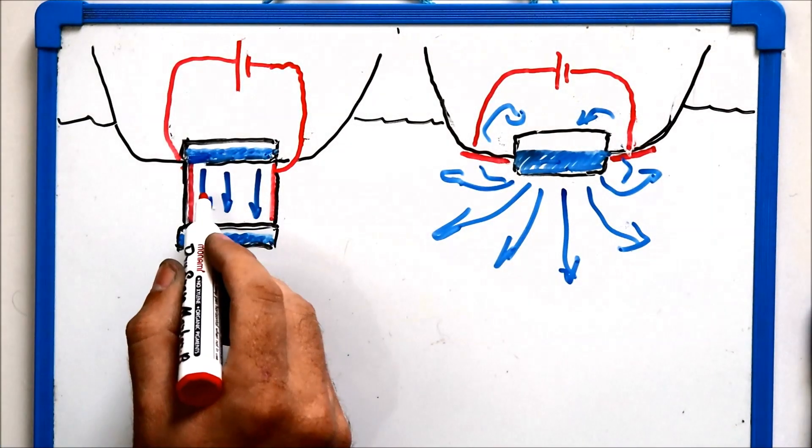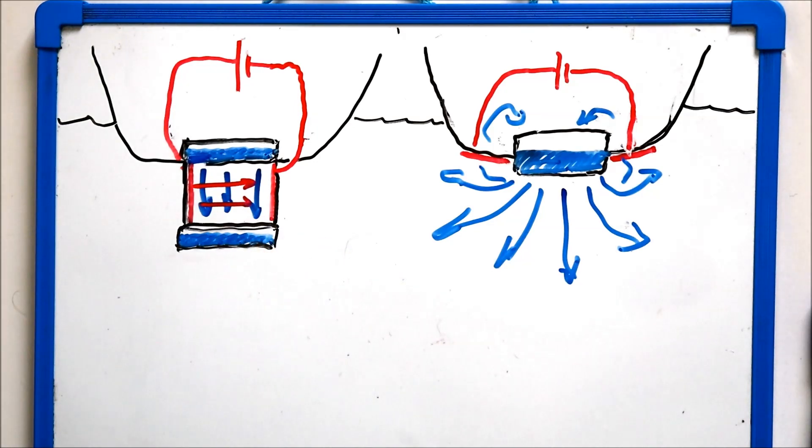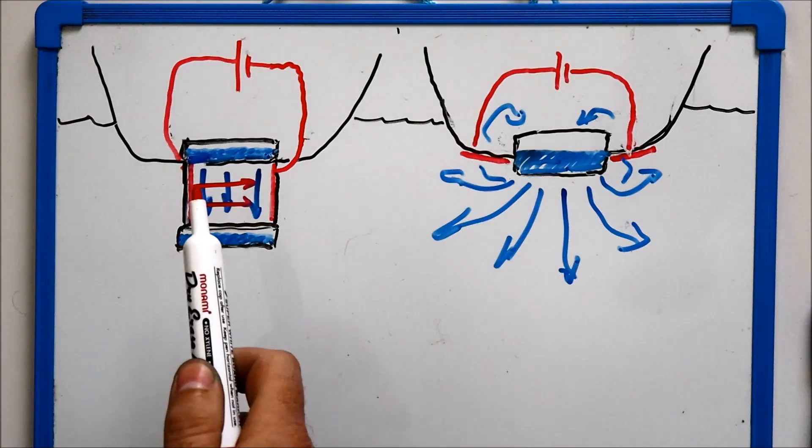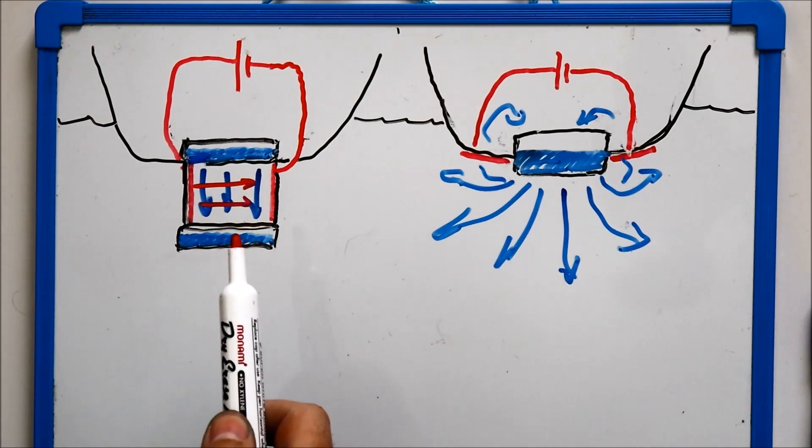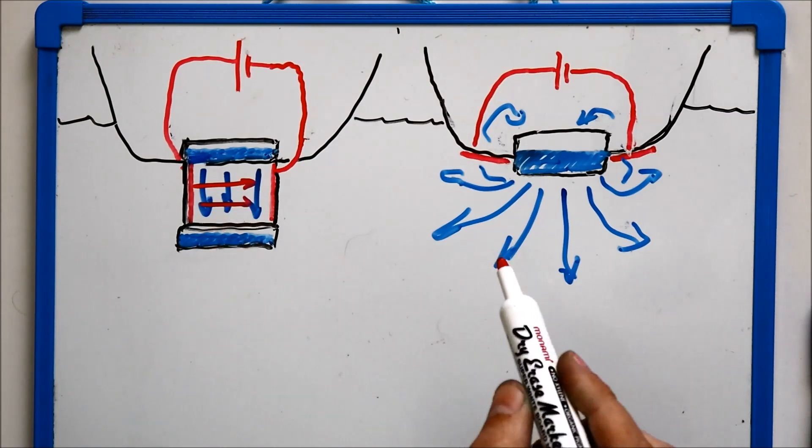To generate the force, current needs to pass from one electrode to the other and it needs to cut the magnetic field lines at 90 degrees. Once again, with the ducted version, the lines are uniform and all of the lines cut the magnetic field lines at 90 degrees.